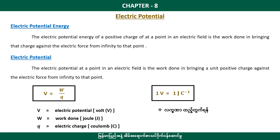This is the electric potential. Electric potential energy is here — the electric potential energy of a positive charge. There's a product of electric potential energy at a point in an electric field. A positive charge — electric potential energies — it's the word.